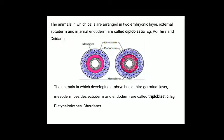Animals in which cells are arranged in two embryonic layers, that is external ectoderm and internal endoderm, are called diploblastic organisms, which includes Porifera and Cnidaria. Triploblastic organisms include Platyhelminthes and chordates, in which the body is composed of three germ layers: ectoderm, endoderm and mesoderm.